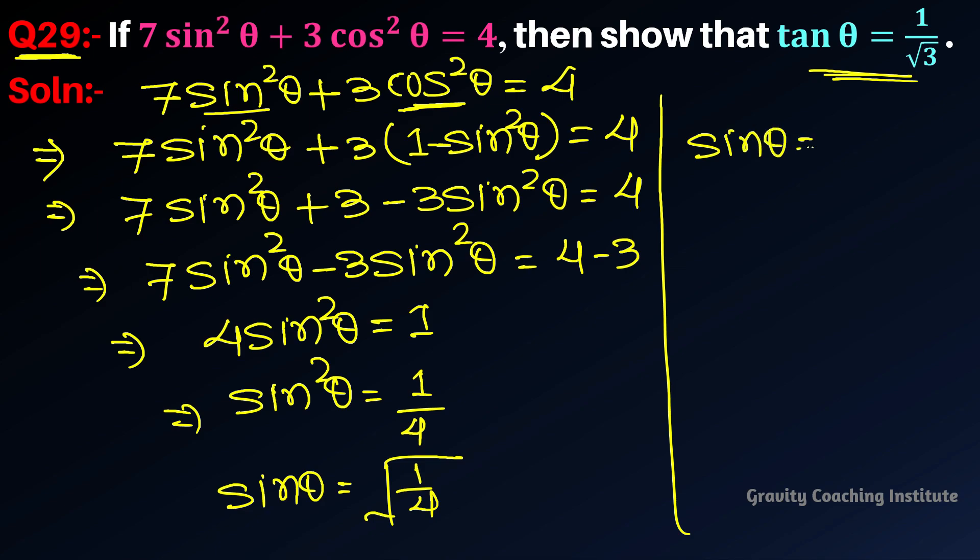sin θ = 1/2, and we know that 1/2 is the value of sin 30°. So θ = 30°. We need to find tan θ = 1/√3.